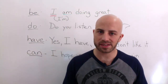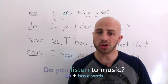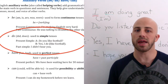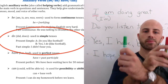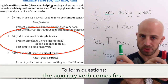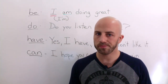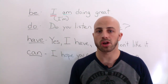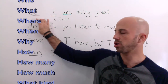What about the question form? We have: 'Do you listen to music? Yes, I do.' 'Do' is used in simple tenses and to make a question. You simply invert the subject and the auxiliary verb, so the auxiliary verb comes first: 'Do you listen to music?' — that makes a question.